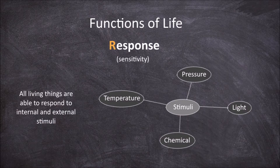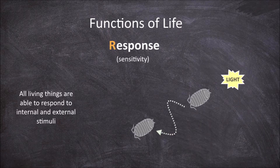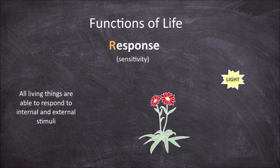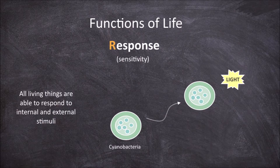In smaller invertebrates like slaters, the stimulus could invoke a movement that leads them out of the light. In plants it can invoke growth towards the light. In unicellular organisms such as cyanobacteria it can cause movement towards better light conditions. These are all examples of a response to the stimulus light.